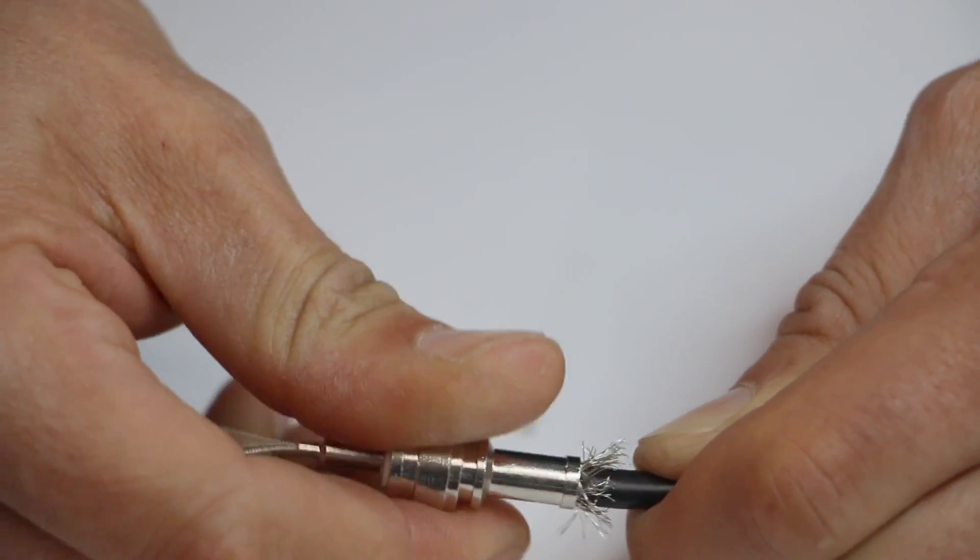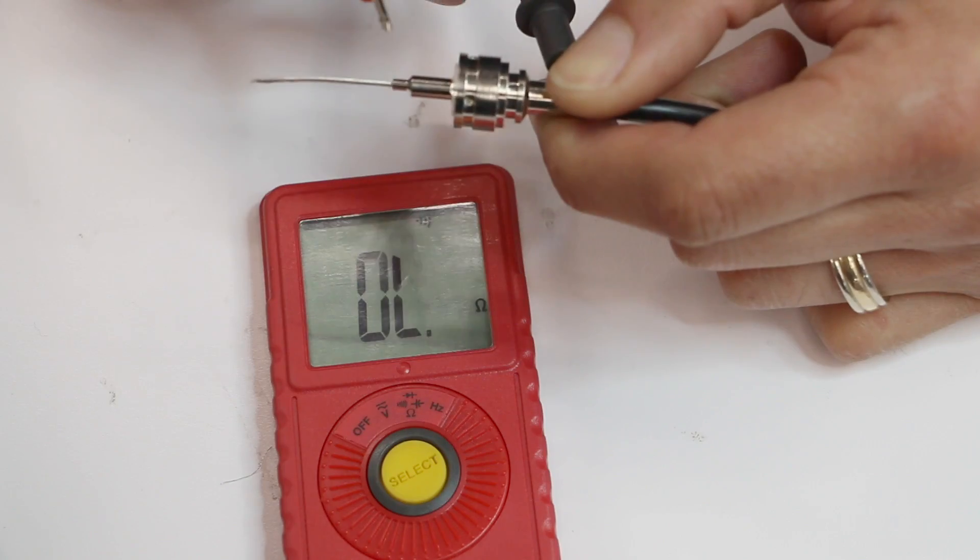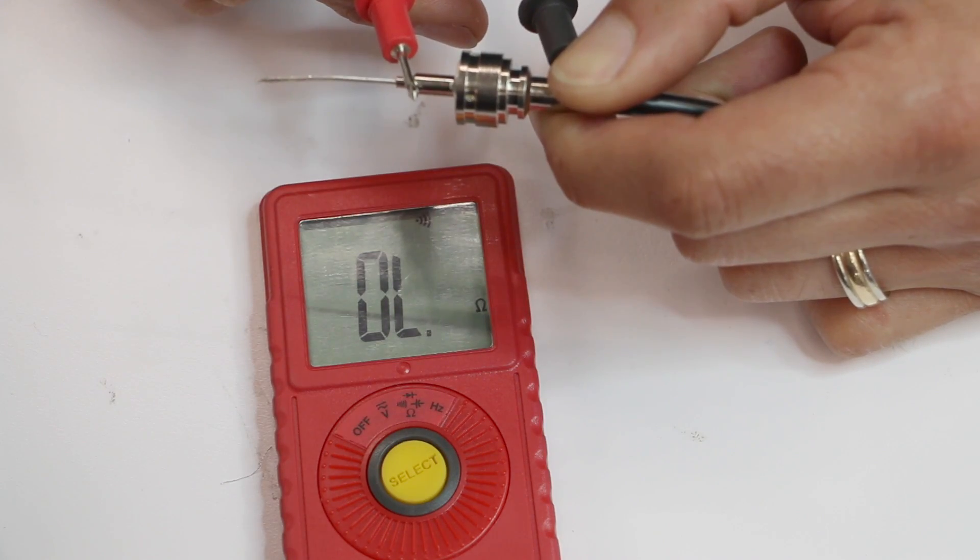Use a multimeter to verify a good installation. Done properly, no numbers will appear in your multimeter. Not even 0.00 should appear.